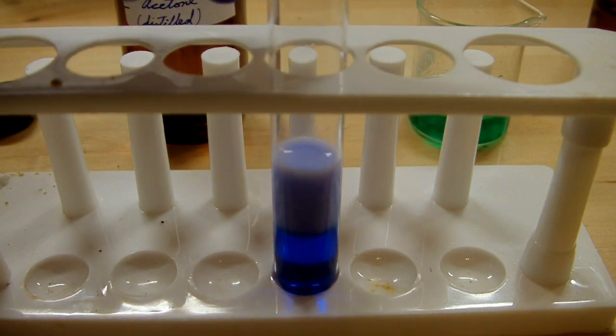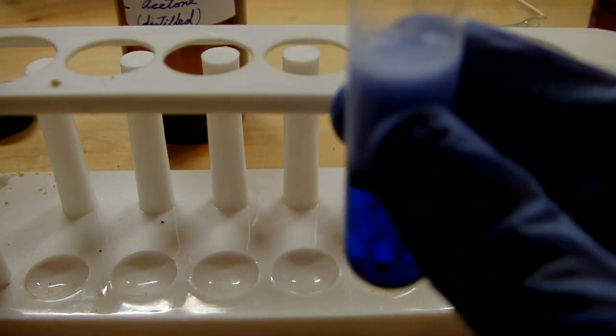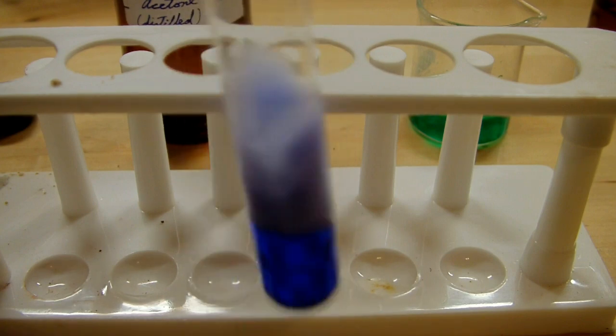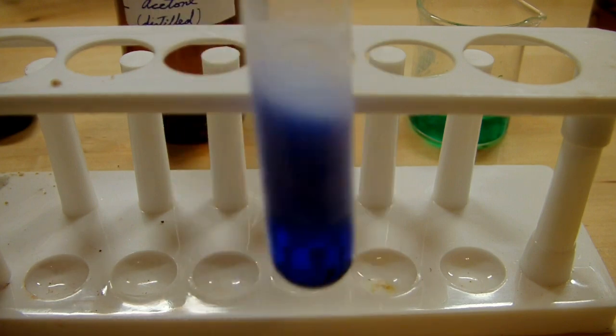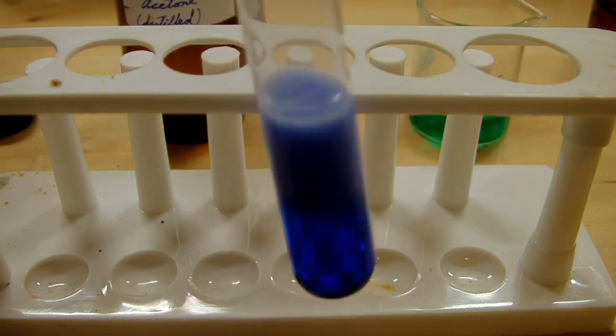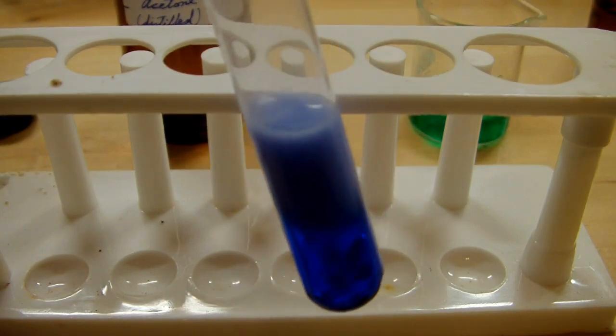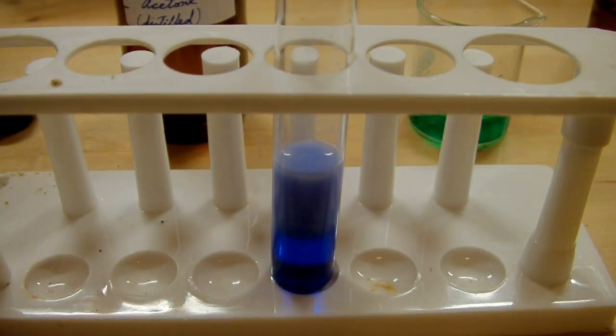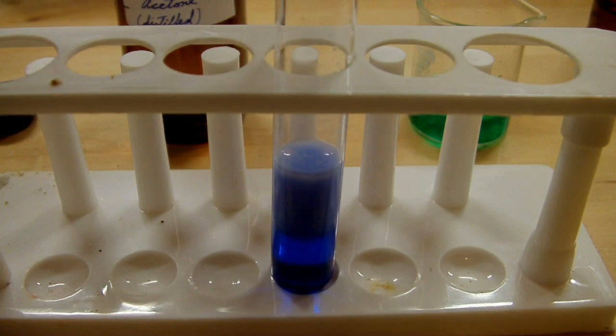As the acetone is added, we get a precipitate. And just by feeling this, yeah, it's a little warm. It's a good thing I cooled it down. So we'll swirl this around to mix everything. And we get a beautifully colored precipitate, which looks to be white. But that's just because the rest of the solution is such a dark blue.